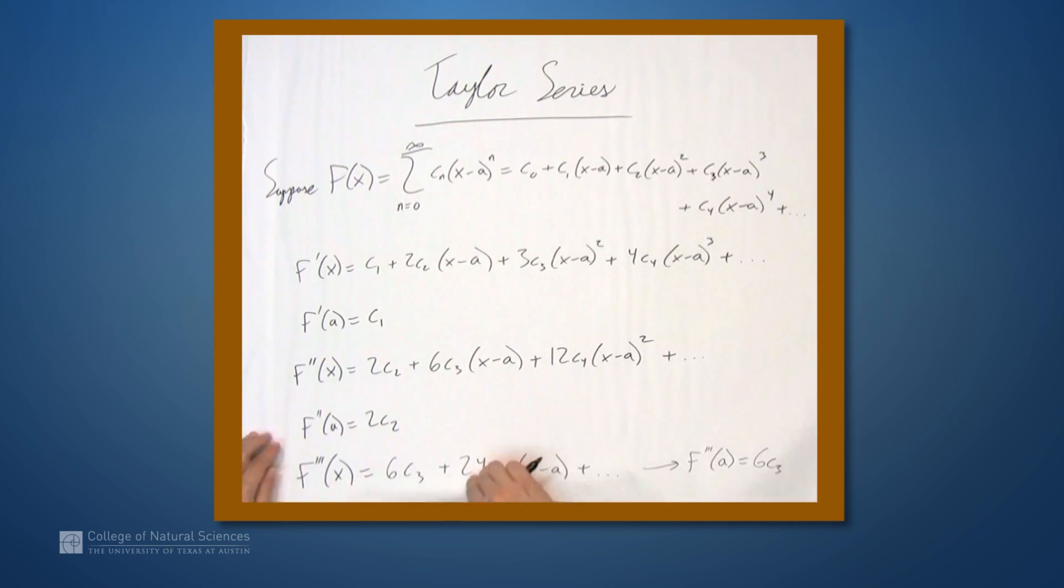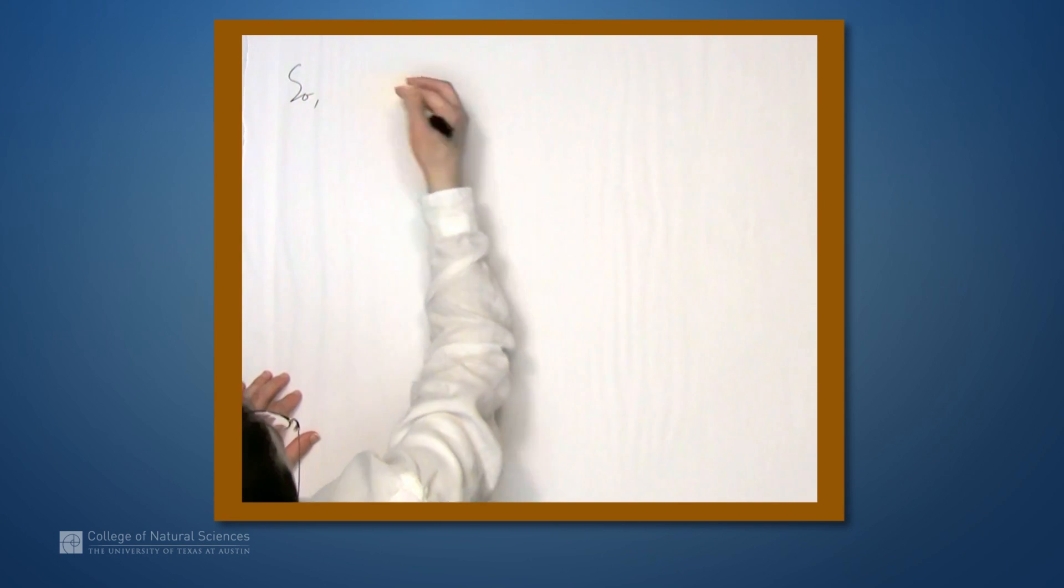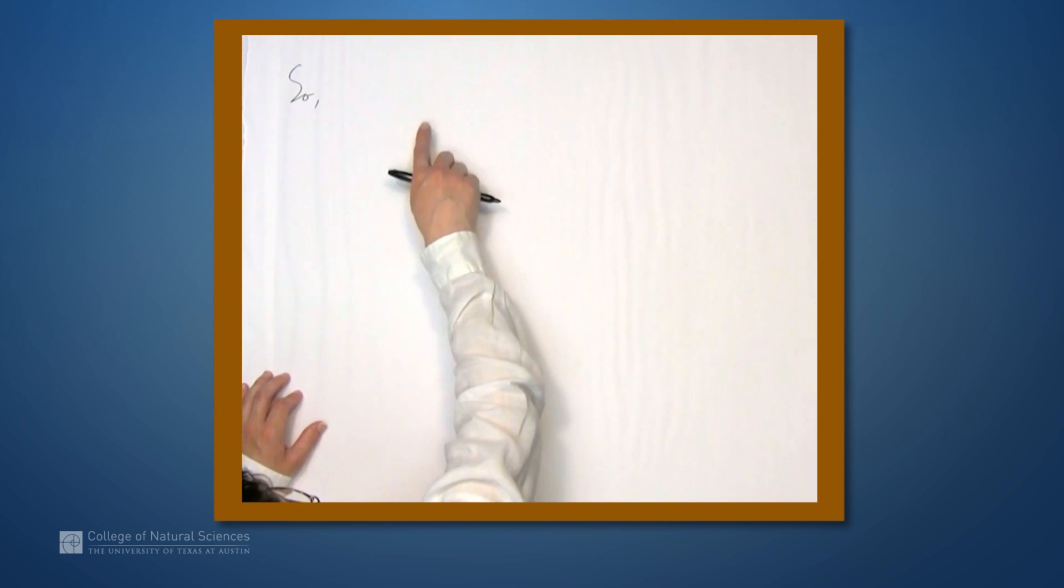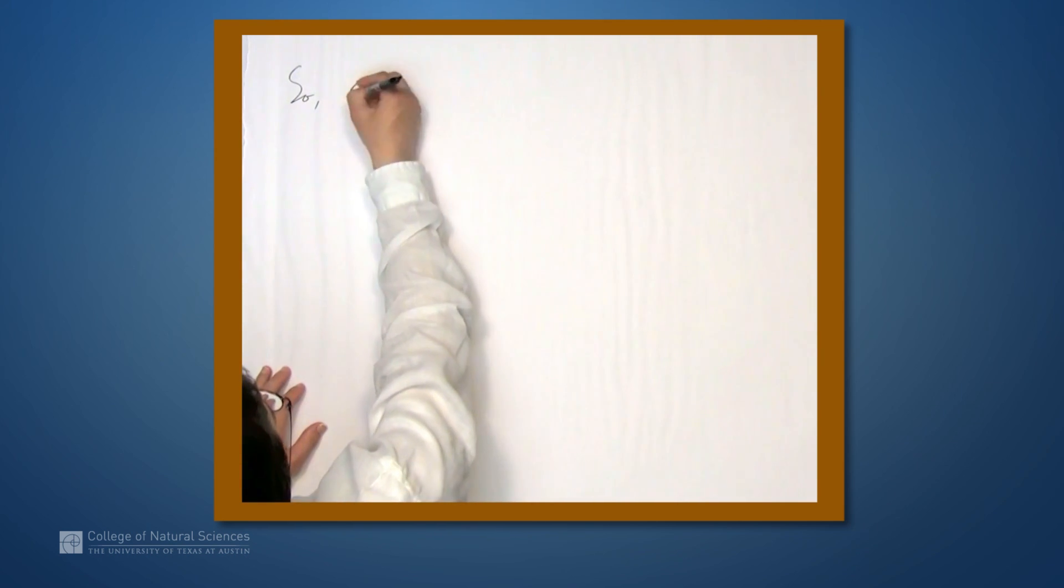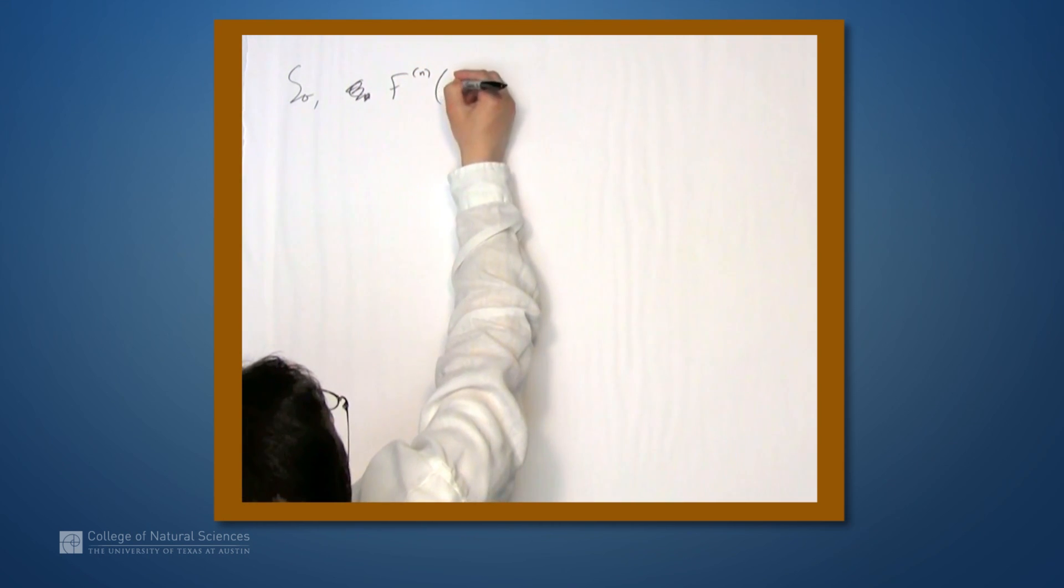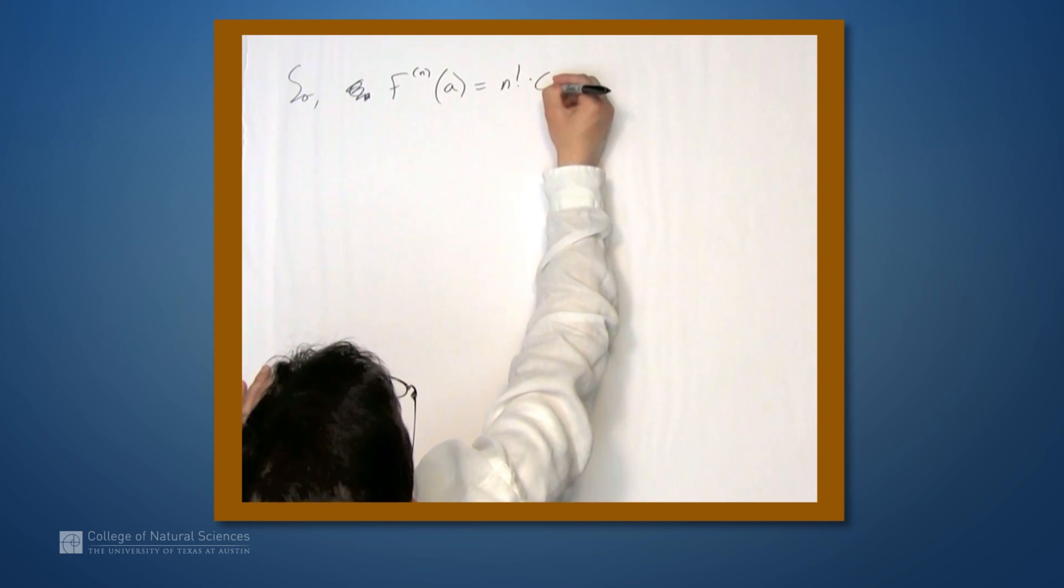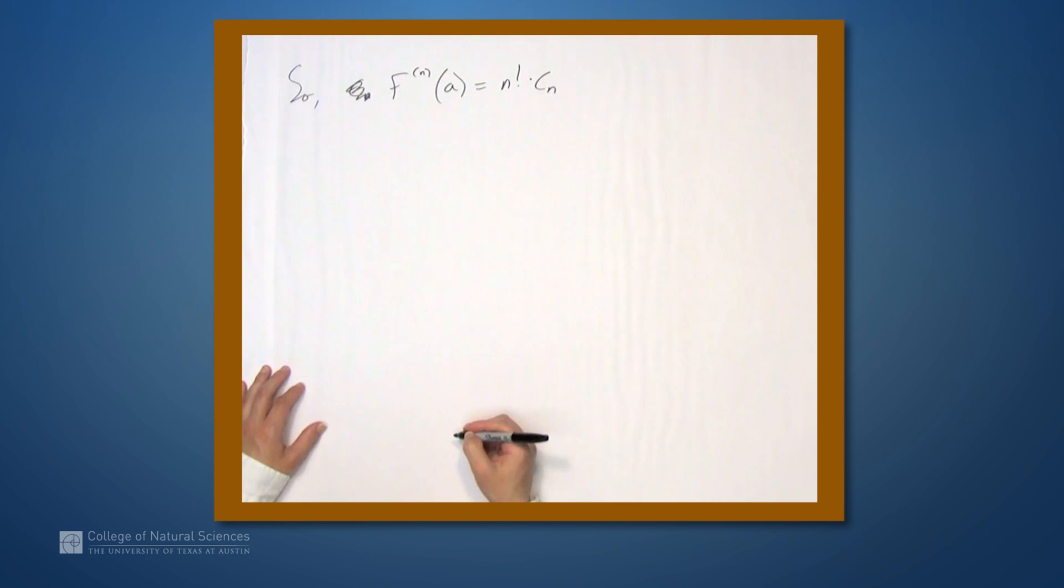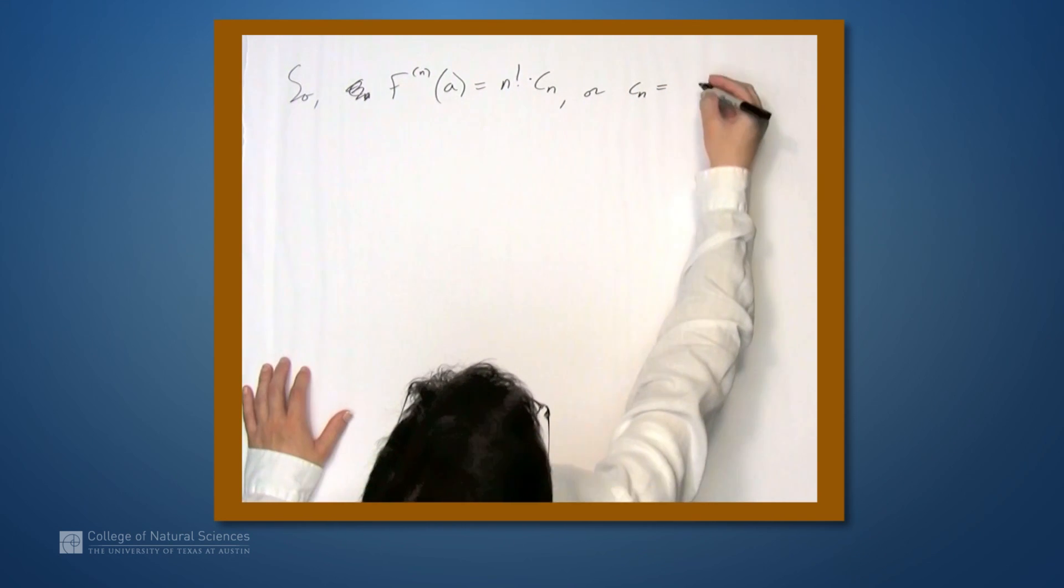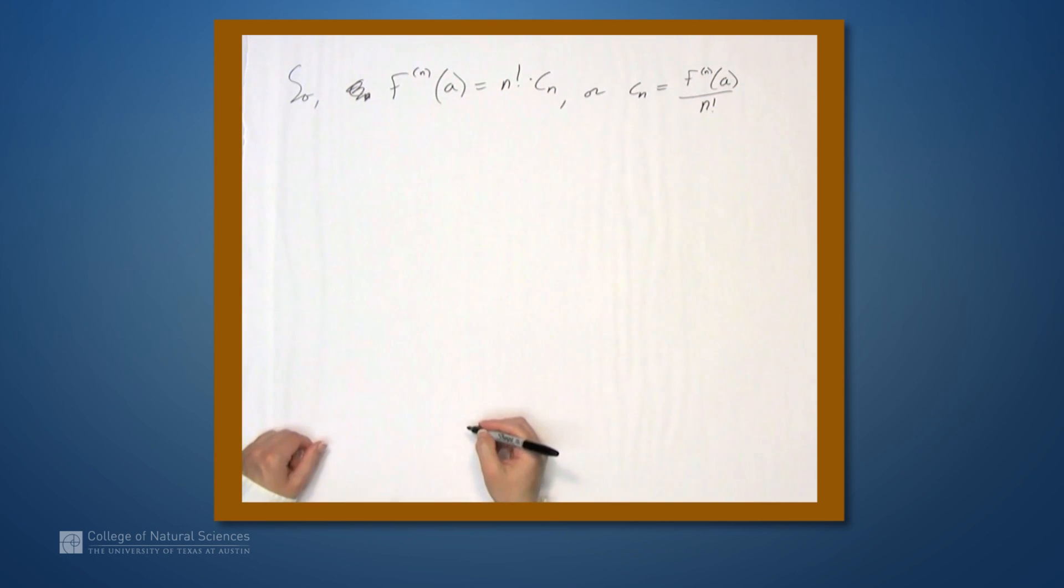And there's a pattern in here. Every time we take a derivative, one more factor from the exponent comes down, so we end up with things like 2 times 1, 3 times 2 times 1, 4 times 3 times 2 times 1. So the general pattern is that the nth derivative evaluated at a is equal to n factorial times c sub n. We can rearrange this to get a formula for c sub n. C sub n is the nth derivative evaluated at a divided by n factorial.